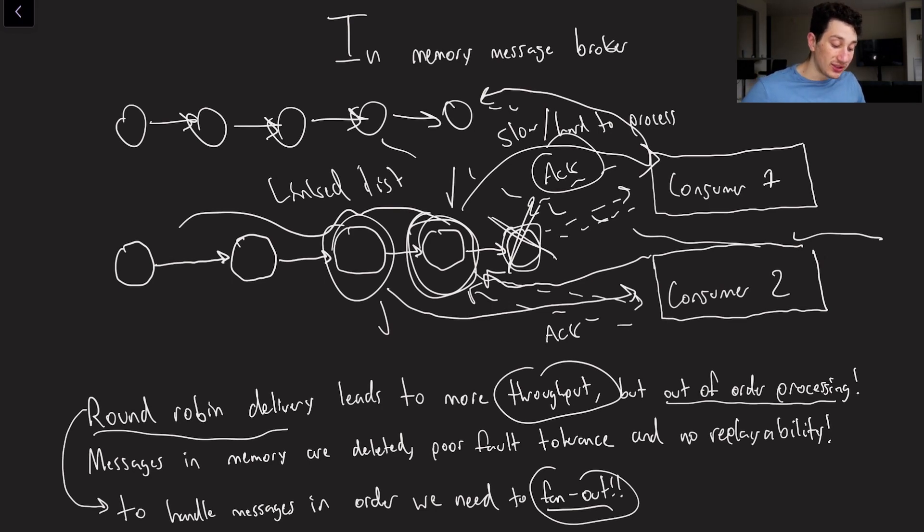Okay, so the other thing is that messages in memory are actually going to be deleted. Like I mentioned, when they're processed successfully, we get rid of them, we don't think about them ever again, we literally erase them from memory or garbage collect them. So what that implies is that we have poor fault tolerance. If this machine were to go down, unless we have something like a write-ahead log to write all of our events to disk, we're just going to lose all of these events. And additionally, of course, we can't replay these messages because we're deleting them once they are consumed.